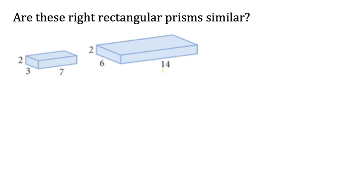Solids that have the same shape, but not necessarily the same size, are similar. If these two prisms are similar, the corresponding sides will have equal ratios.